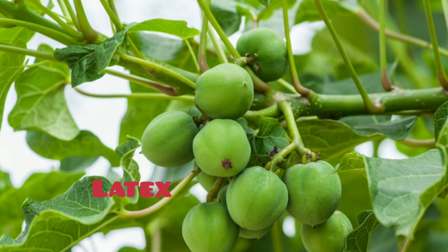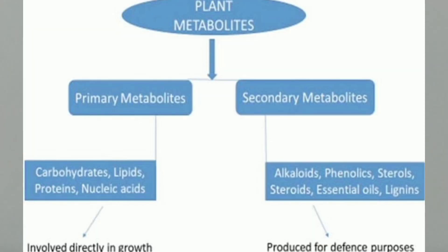These are some of the examples of secondary metabolites in case of plants. So that is about our video on primary and secondary metabolites. We have learnt about different types of secondary metabolites, from which plants they are obtained, and for which purposes we are using them. Hope you understand well. Thank you so much for watching. Jai Hind.